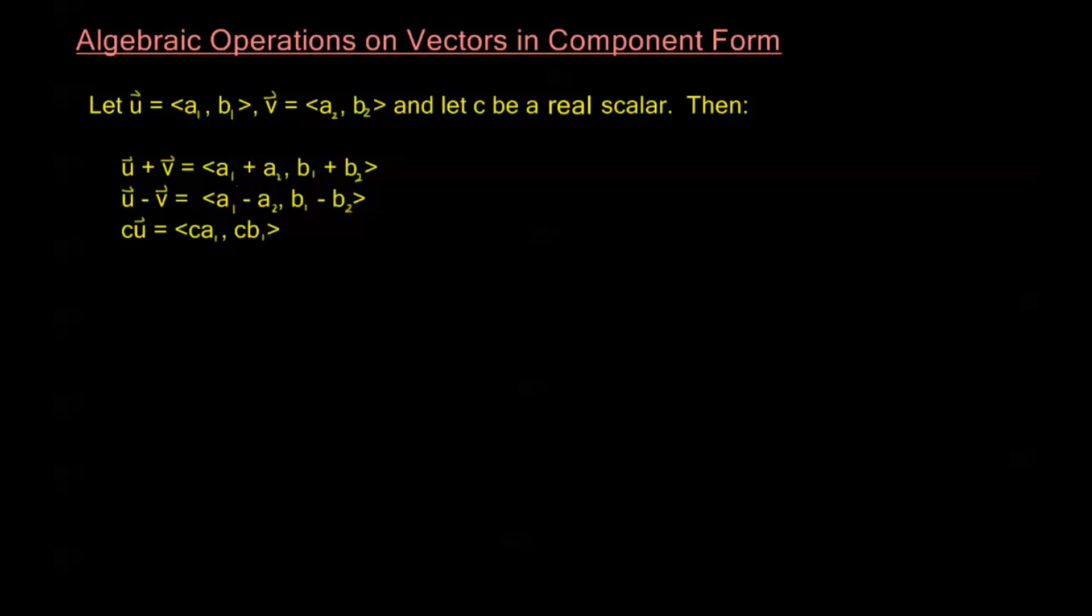Now, the reason I did it in that order, even though I wrote it in a different order, is that we really just have two operations here. We have addition, and we have multiplication by a scalar, and subtraction is just combining these two together. What I'm doing is I'm doing addition on the vectors u plus the vector v multiplied by the scalar negative 1. So really I'm doing addition here, but I multiplied v by the scalar negative 1, so negative v then is going to be <-a2, -b2>. And then taking the sum of these two vectors gives me this difference formula here.